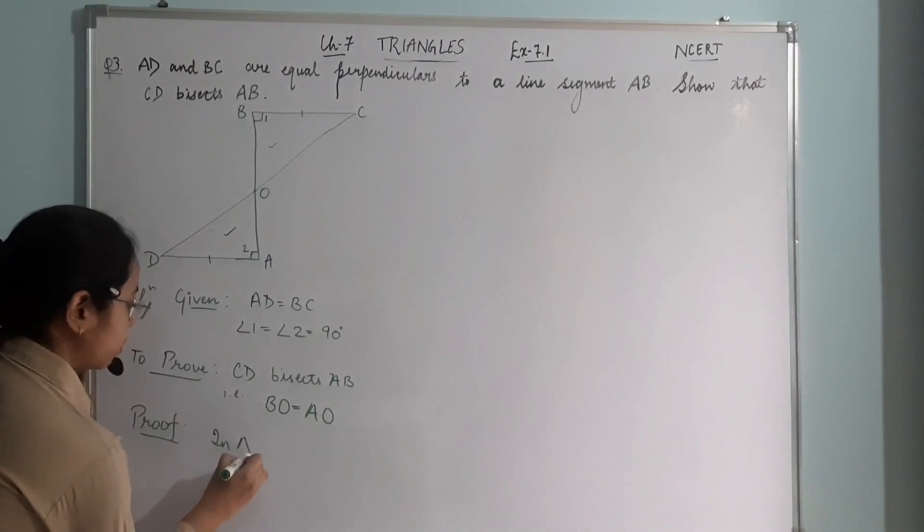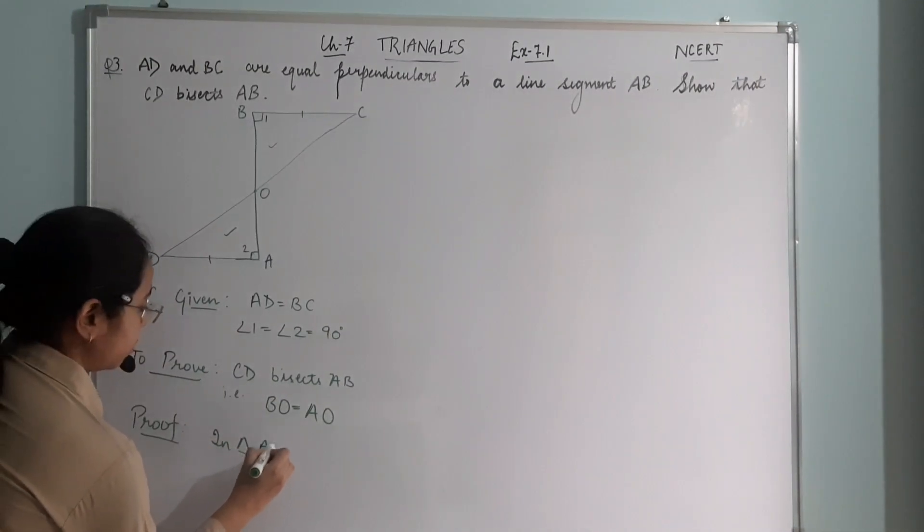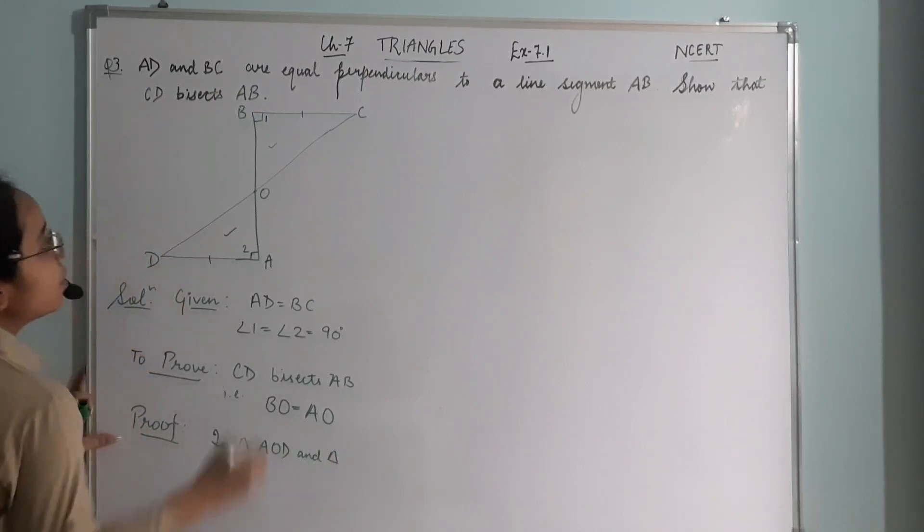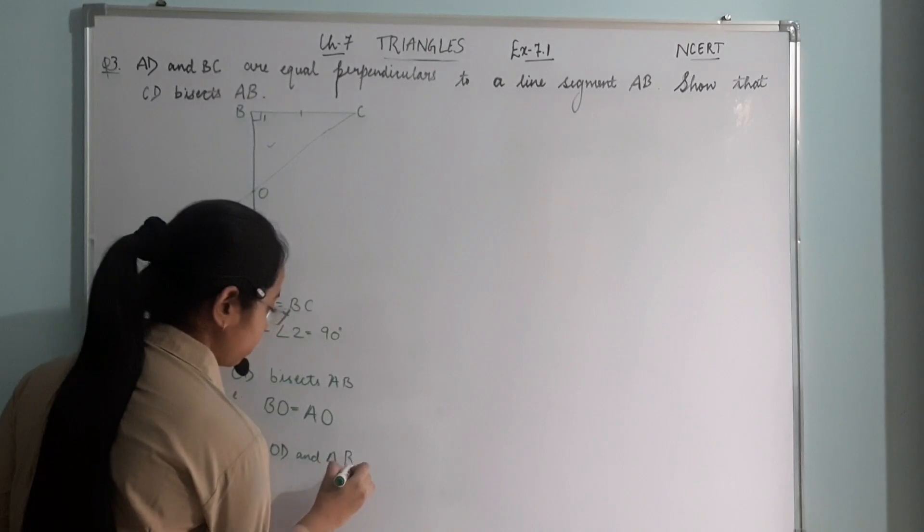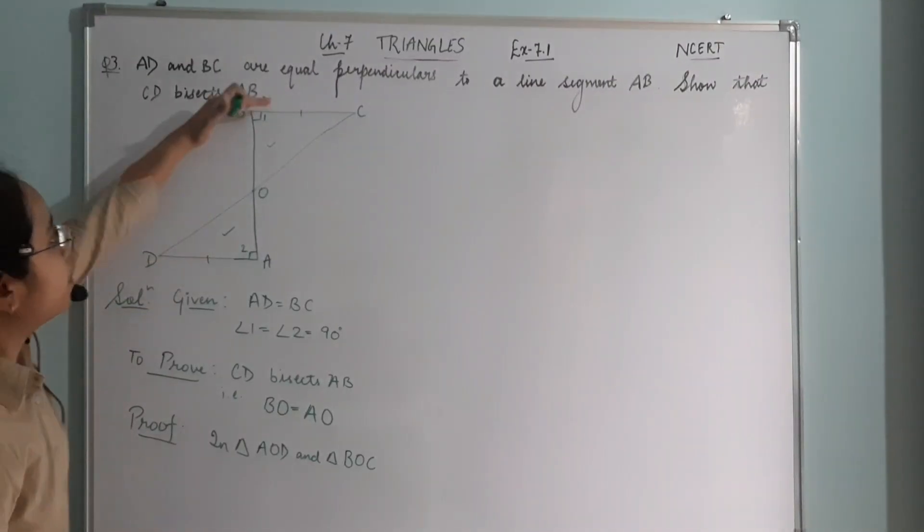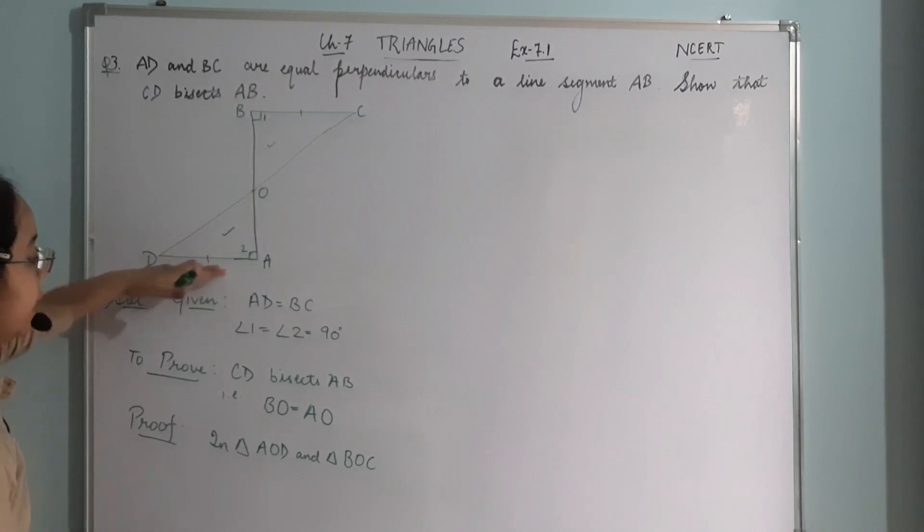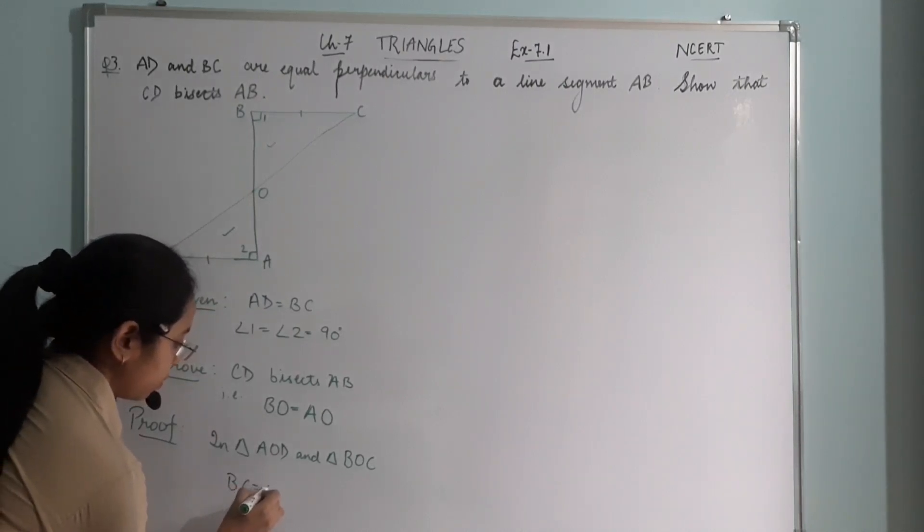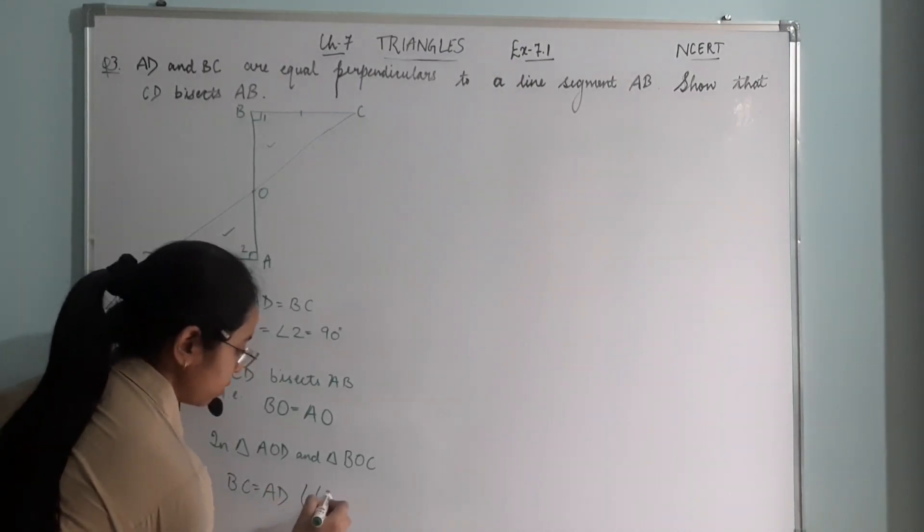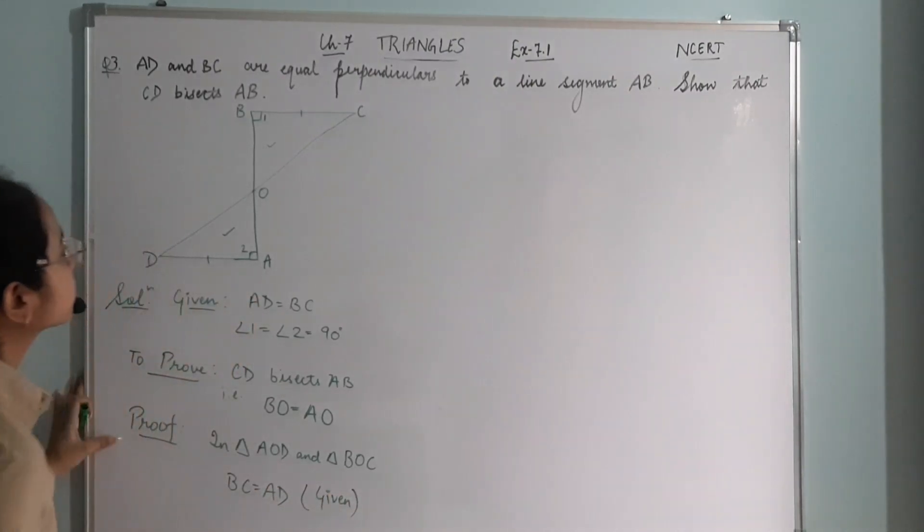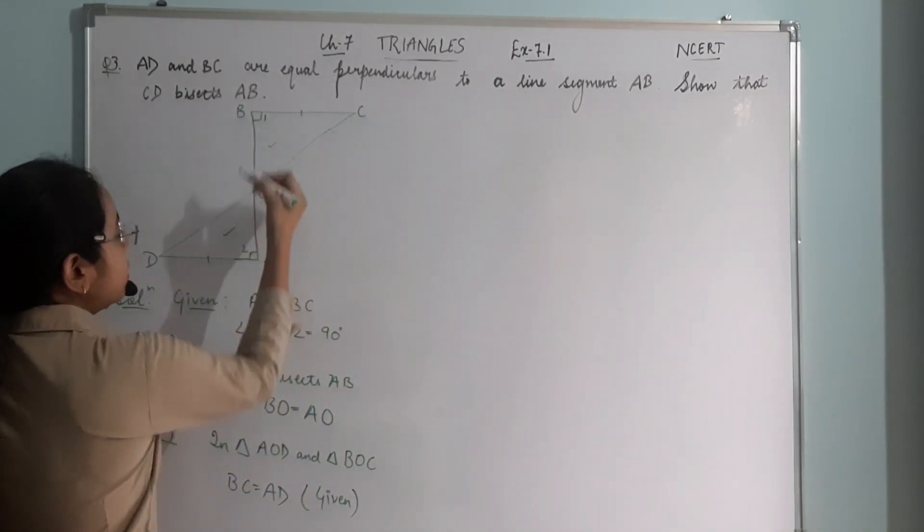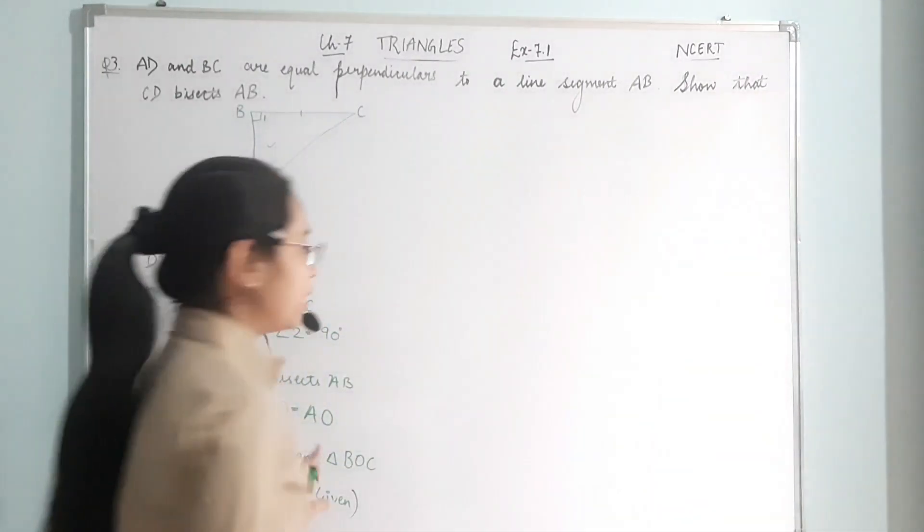So in triangle AOD and triangle BOC, BC equals AD. This is given. BC equals AD is given.